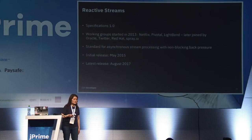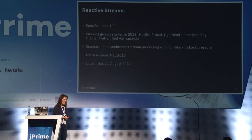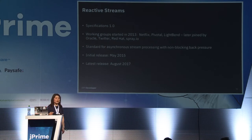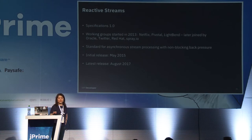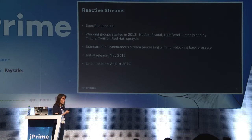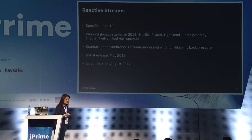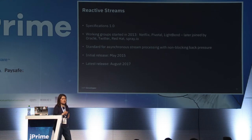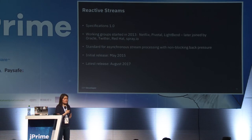Another specification is Reactive Streams, currently at version 1.0. It's a standard for asynchronous stream processing with non-blocking back pressure, led by Lightbend, Netflix, and Pivotal — and now also Oracle, Twitter, Red Hat, and SprayIO. The latest release came out in 2017. RxJava only partially supports it, but Spring Reactor supports it fully, as does Akka.